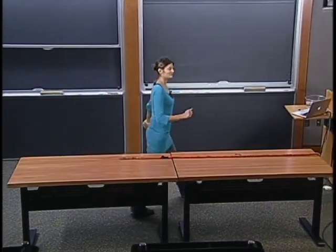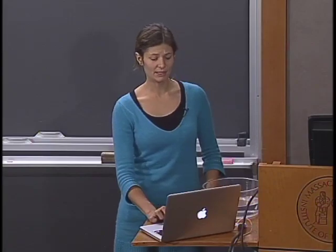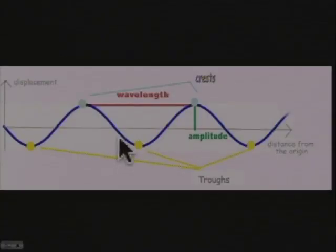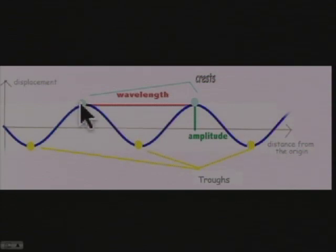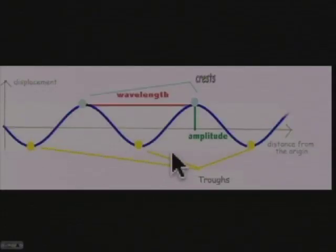Let's look at this in a drawing. Here, we have the displacement as a function of the distance from the origin - the distance from the place where the perturbation is taking place. We call amplitude the maximum displacement of a wave, while the crests and troughs are the highest and lowest points reached by the wave.